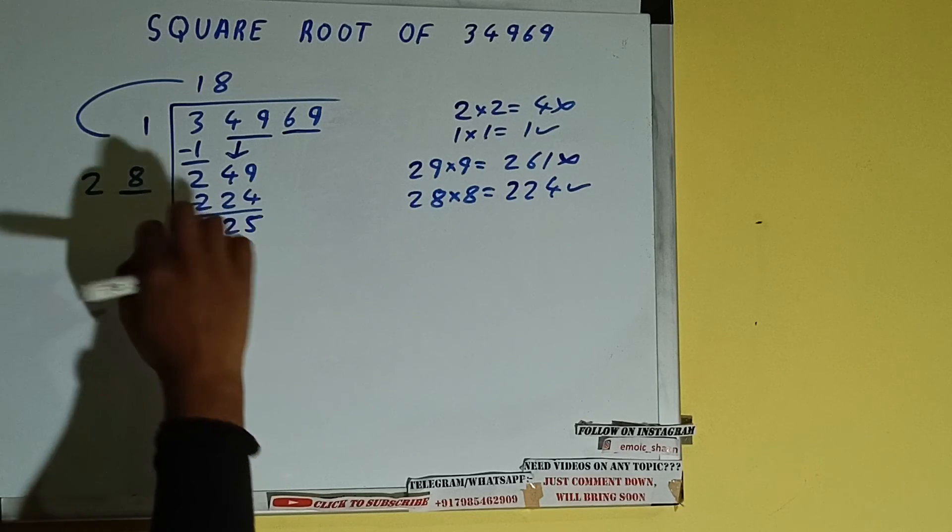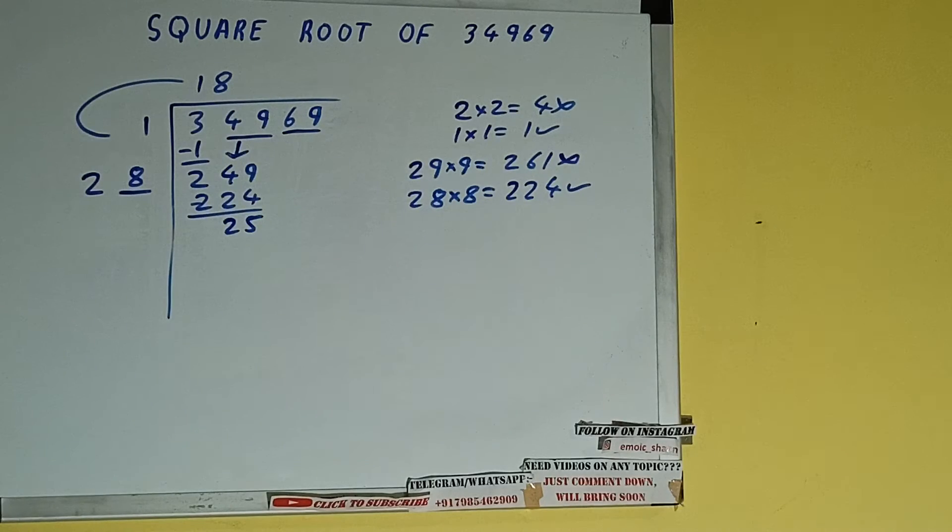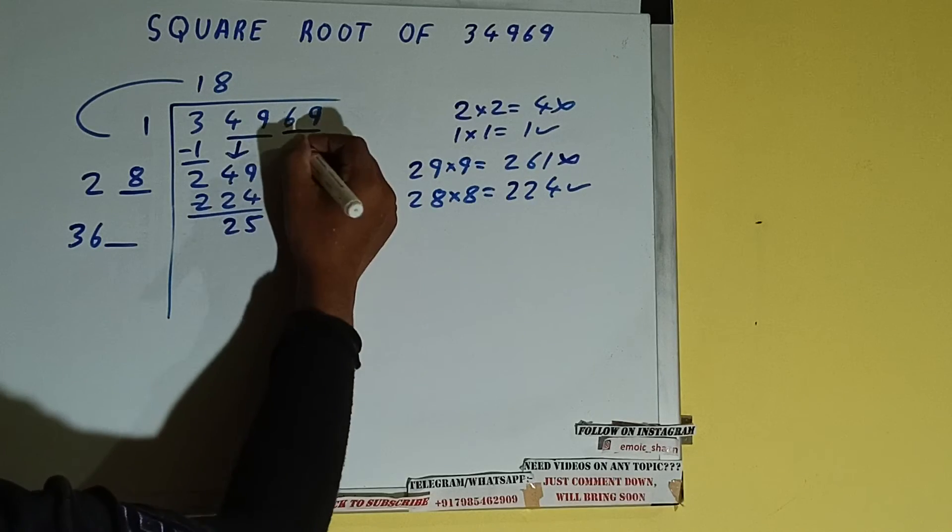Now 28 into 8 we did, so add both. So 28 plus 8 will be 36. Write it here and keep a digit extra, and this number we need to make it big. So bring that next pair down and it will be 2569.